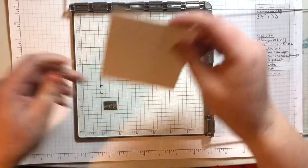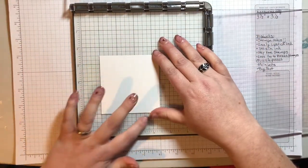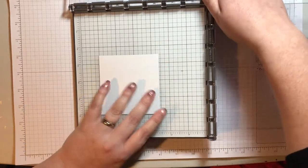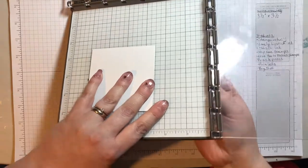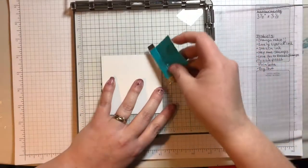And just so I know how to place my images, I'm going to use the grid lines on my Stamparatus so that I know that my piece of paper is straight. And then I'm going to use the magnets that come with it.